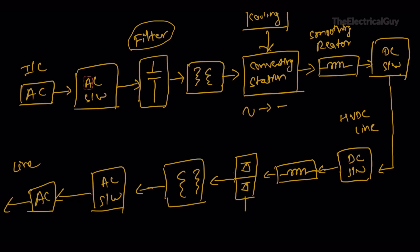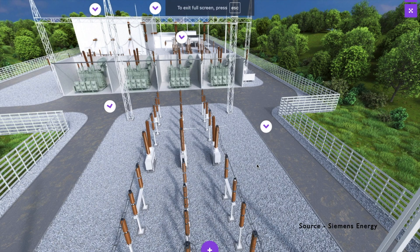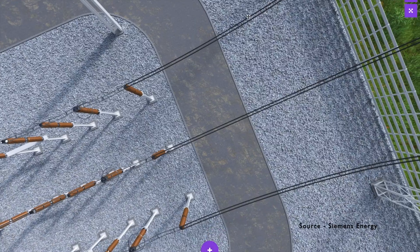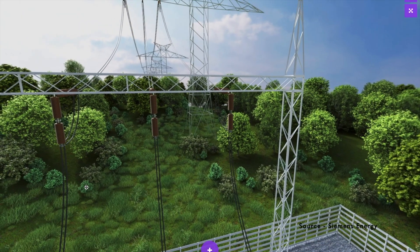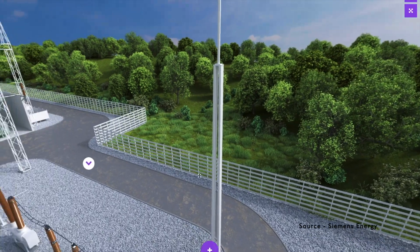Now let us look at the 3D model of this HVDC system, which will give you better clarity of what we discussed so far. Here is the 3D model — you can see everything is there. We have the AC switchyard, the converting transformers connected here, then a conversion hall where AC-to-DC conversion happens, then a DC switchyard, and also the cooling arrangement. Here you can see the incoming lines coming from a different substation, connected to the AC switchyard.